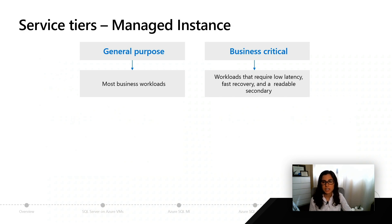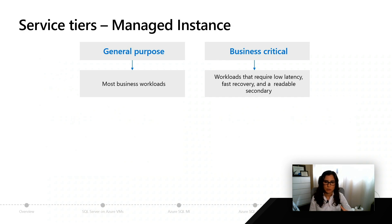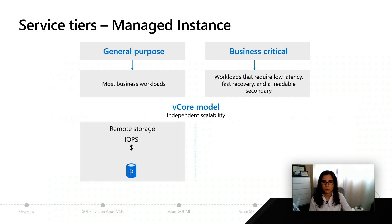Most of our customers are running on general purpose, but some have really extreme requirements around recovery or latency, and they want to take advantage of a readable secondary, which we'll talk about. Those are the main decision points between general purpose and business critical. When it comes to purchasing options, there's only one model — the vCore model — and this is going to let you scale your compute independently from your storage.